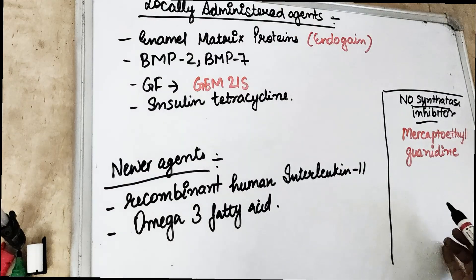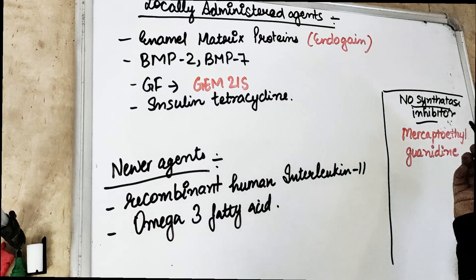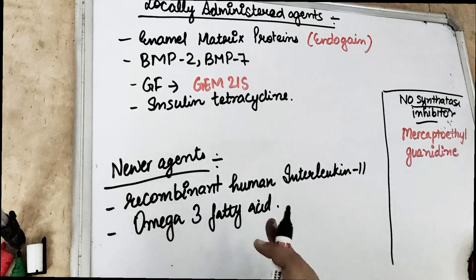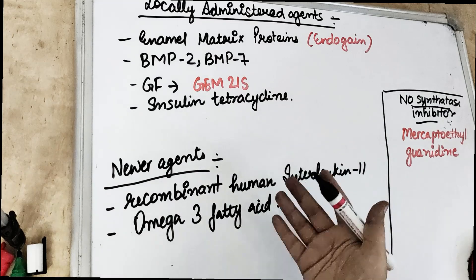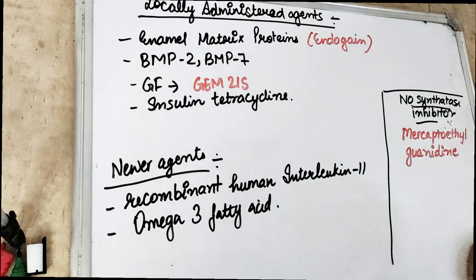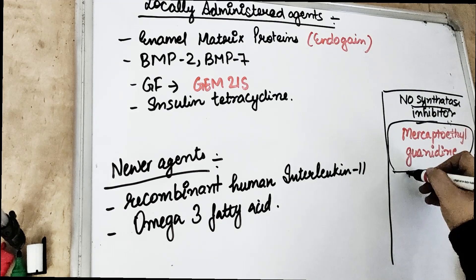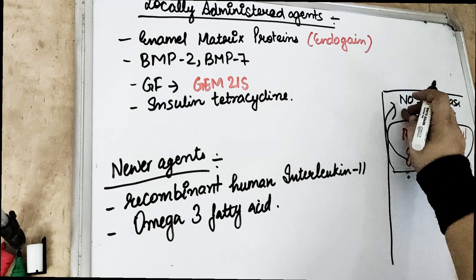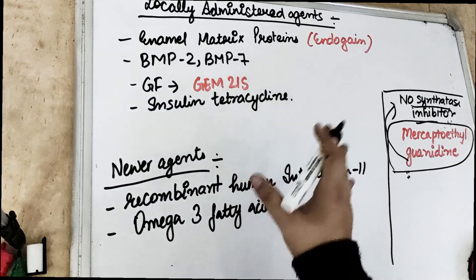The last modulation target is NO synthetase inhibitor — a newer agent for host modulation. There is nitric oxide production during inflammation in the presence of cytokines. Mercaptoethylguanidine prevents tissue destruction by inhibiting nitric oxide synthesis.